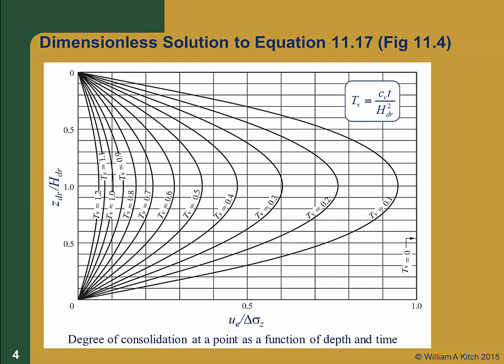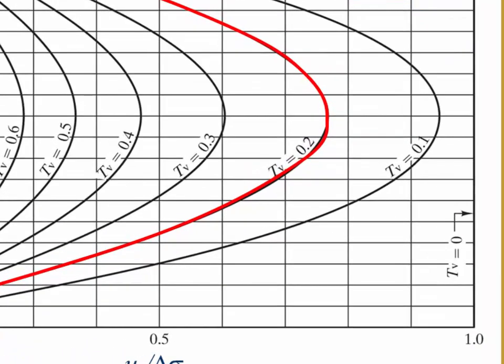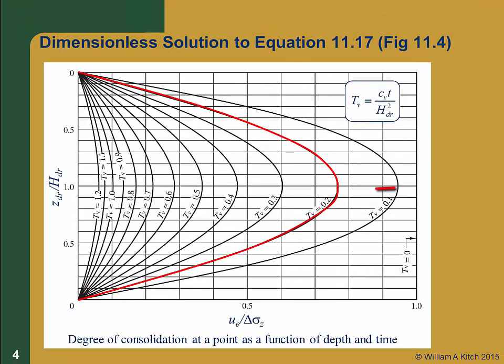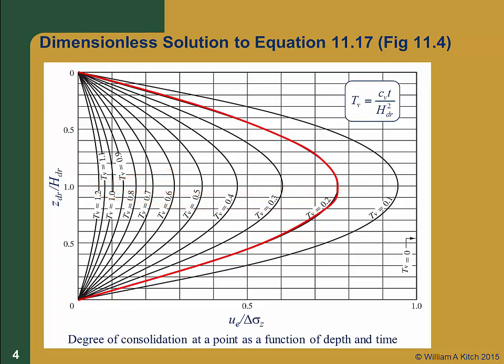The curves in this figure are called isochrones because each represents a specific point in time. For example, this isochrone represents the time where the time factor tv is equal to 0.2. The isochrones represent increasing time from right to left. So if we want to know the excess pore pressure one quarter of the way down from the top of the consolidating layer at a time when tv equals 0.2, we'd start at z_dr over h_dr of 0.5 and draw a line to the isochrone where tv equals 0.2. Then we draw a line down to the x-axis and find that the ratio of the current excess pore pressure u_e to the initial excess pore pressure delta sigma z was 0.55. We'll do an example later to clarify this computation.